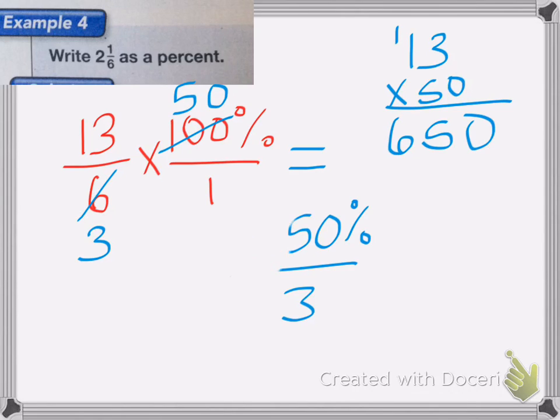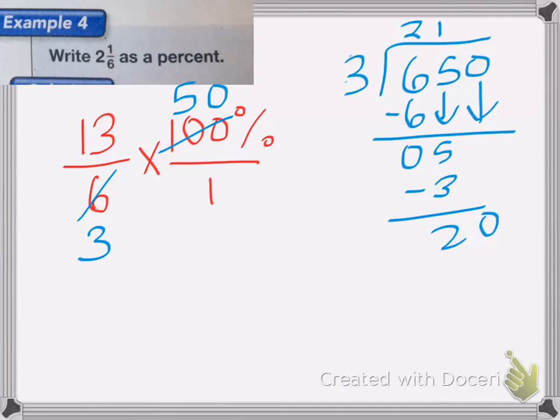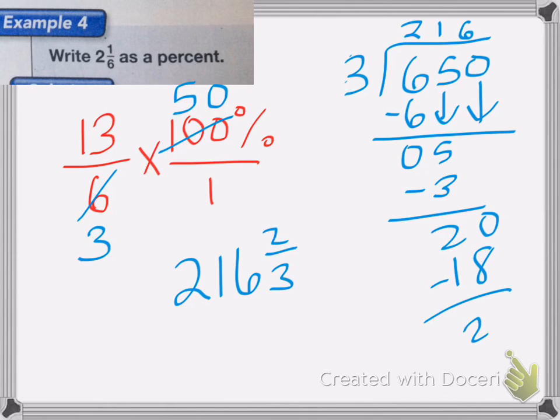So I'm going to divide it. 650 divided by 3. 3 goes into 6 two times. That's 6. Subtract it. 0, bring down the 5. 3 goes into 5 once. That's 3. Bring down the 0. Subtract it. Bring down the 0. That's 20. So bring down the 0 and you get 20. 3 goes into 20 six times. That's 18. Subtract, we get 2 left over. So my answer is going to be 216 and 2/3 percent.